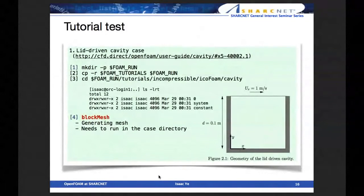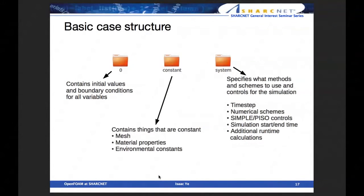In the cavity directory, there are three folders: zero, system, and constant. The directory named zero contains initial values and boundary conditions for all variables. Constant contains mesh information. System contains time steps, numerical schemes, and control parameters. Please look at the user guide or manual for further usage details.